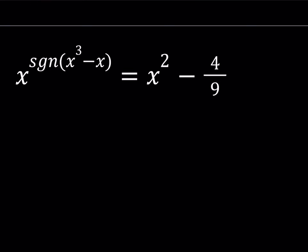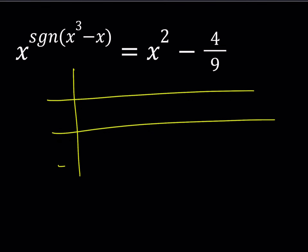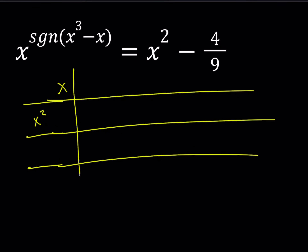Here's our equation — let's go ahead and solve it. By that definition, I need to know where x cubed minus x is positive, where it's negative, and where it's 0, because that's where the signum value changes. So let me go ahead and make a table of values with rows for x, for x cubed minus x, and for signum of x cubed minus x.